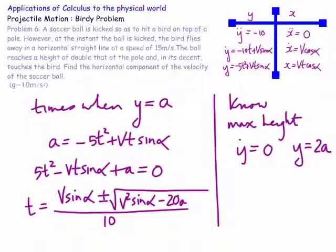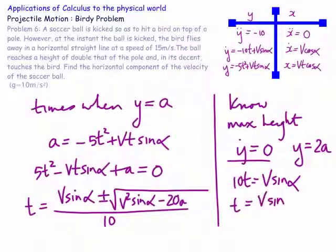If we equate ẏ to zero, we get 10t equals v sine alpha, so the time is v sine alpha on 10.